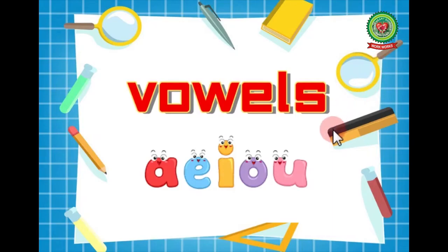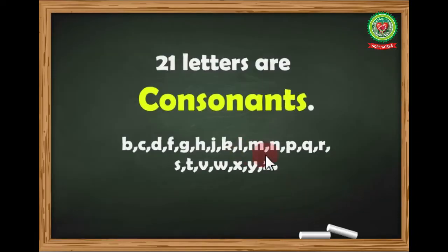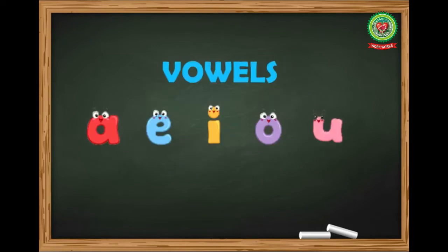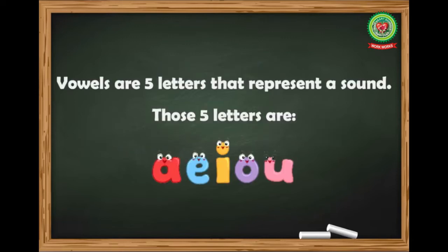Hello students, welcome to your English class. As you all know, in a previous session we have learned about consonants and vowels. We learned that there are 21 consonants in English alphabets, and five vowels: A, E, I, O, and U. Vowels are five letters that represent a sound. Today we will go through different related exercises.